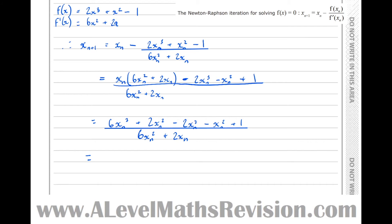That makes 4xn cubed. Then deal with the squares, so plus xn squared plus 1. That's all divided by 6xn squared plus 2xn.